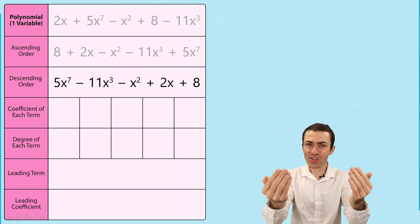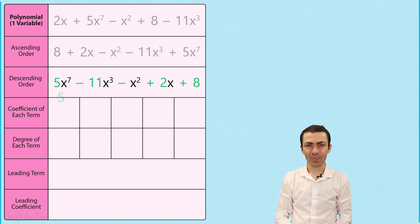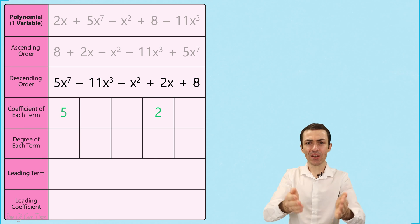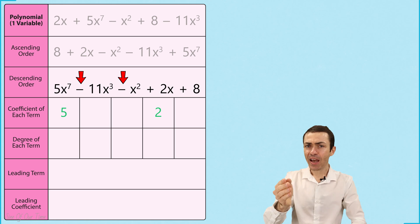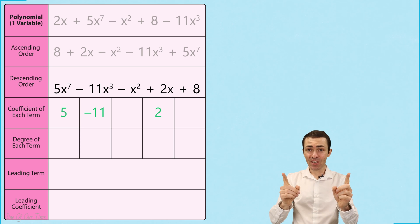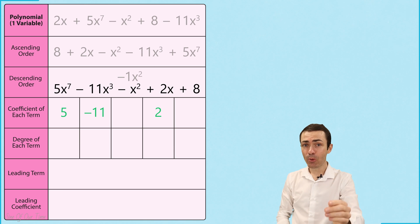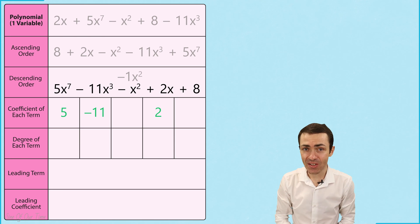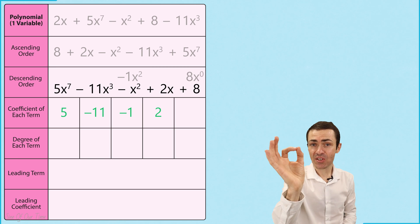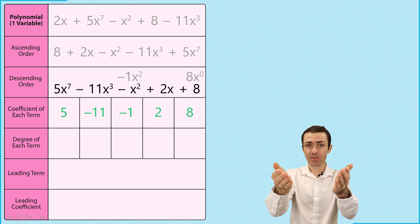The coefficient of each term is just the number that appears before the variable in each term. And please don't forget to write the negative signs where there are any, as they do form part of the coefficients. In this example, minus x squared can be written as minus 1x squared, which means that its coefficient is negative 1. While 8 can be written as 8x to the power of 0, which means that 8 is actually the coefficient of x to the power of 0.